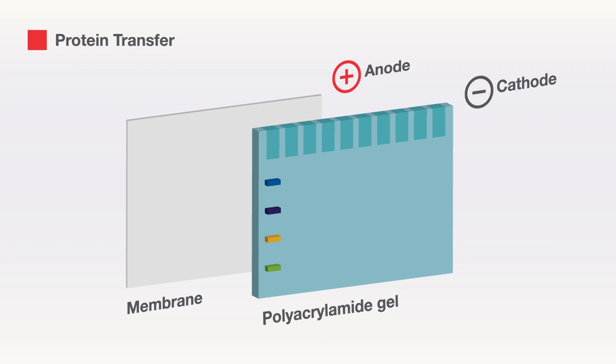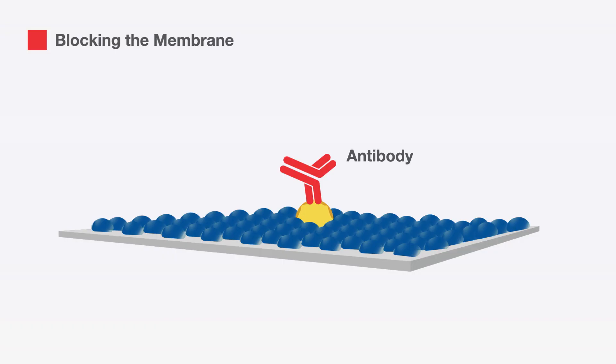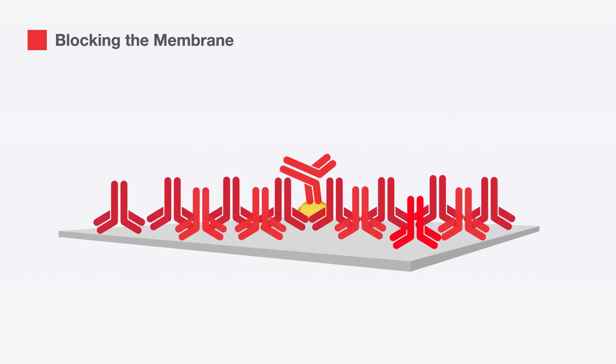Nitrocellulose and PVDF membranes have a high protein binding affinity, which is essential for successful protein transfer. The blocking step ensures that the antibody binds specifically to the antigen, rather than non-specifically to the membrane surface.